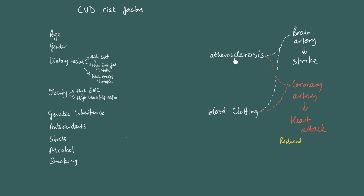Remember why atherosclerosis and blood clotting cause that to happen — it goes back to your understanding of the cardiovascular system. Either atherosclerosis or blood clotting causes reduced blood flow, which gives reduced concentration gradients, reducing the rate of diffusion of oxygen and glucose into cells, and carbon dioxide and metabolic wastes out of cells. If that happens, respiration can't happen efficiently, you don't get enough ATP production, and cells stop working.